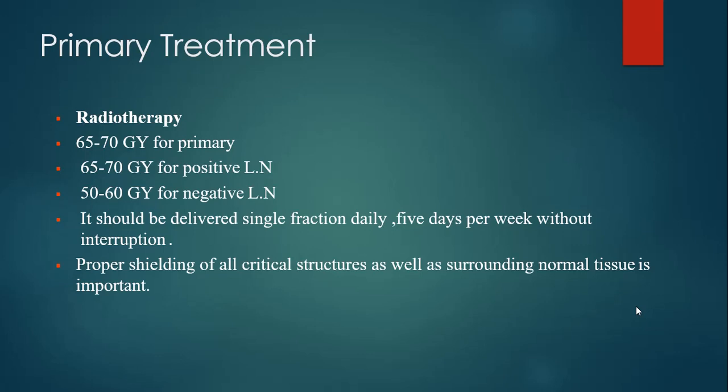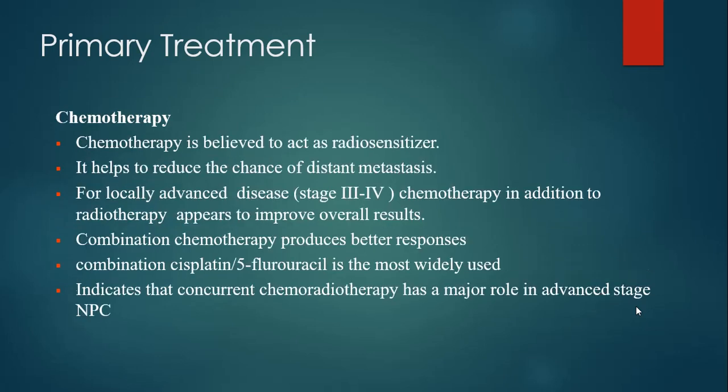The radiation dose should be 65-70 Gray for the primary site, 65-70 Gray for positive lymph nodes, and 50-60 Gray for negative lymph nodes. It should be delivered in single daily fractions, 5 days per week without interruption, and proper shielding of all critical structures is important to save normal tissues.